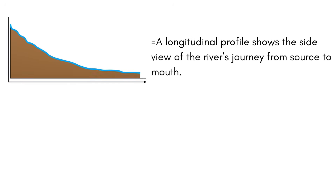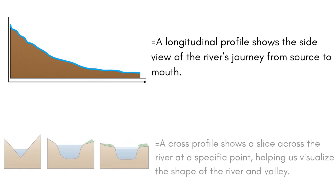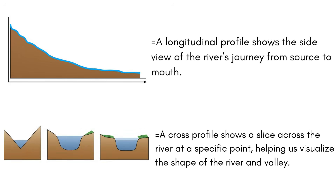So basically to sum it up, a longitudinal profile is going to show the side view of a river's journey from its source to its mouth, whereas a cross profile is just going to show a slice across the river at a very specific point, and that's going to help you to visualize the shape of the river and your valley as well.